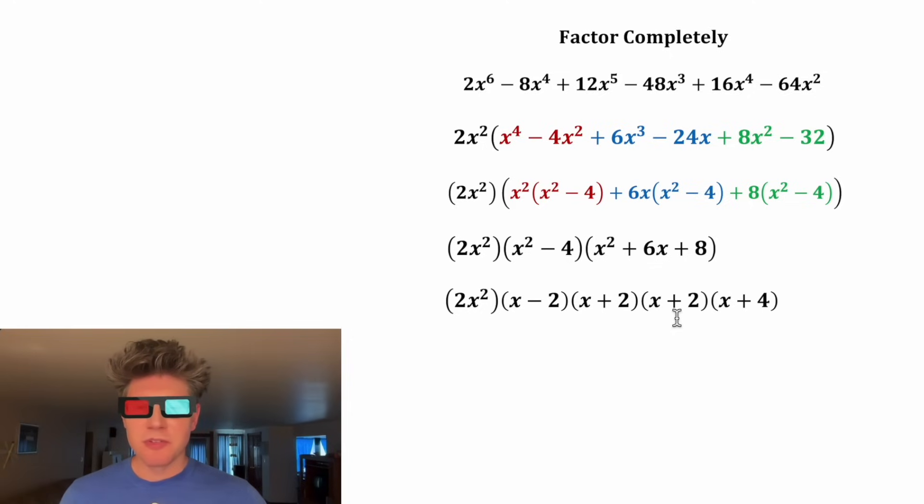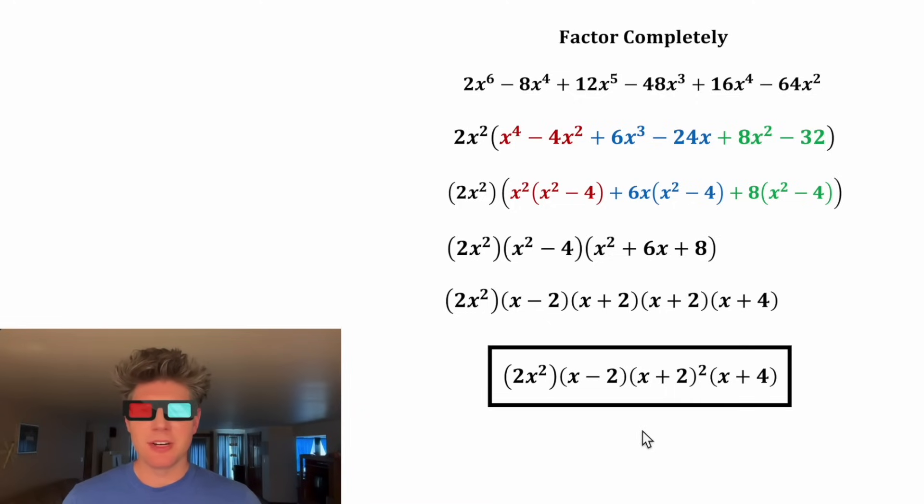This final answer is probably fine, but I'm going to combine the two x plus twos into an x plus two squared. And this is the answer to the question. Let's put a box around it. This is the same thing as this, but fully factored. How exciting.